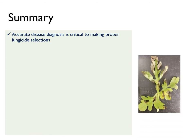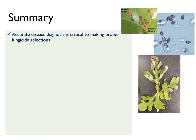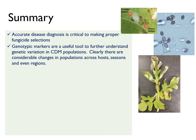In final summary, I want to emphasize the importance of making an accurate diagnosis for disease management. In the case of downy mildew, you always want to confirm the presence of sporangia and sporangiophores before deciding which fungicides to apply. Genotypic markers are a useful tool to further understand genetic variation in our cucurbit downy mildew populations. Clearly, there are considerable changes in populations across hosts, seasons, and even regions.